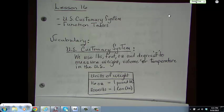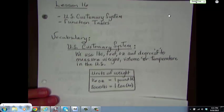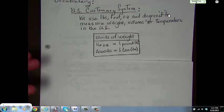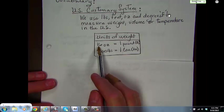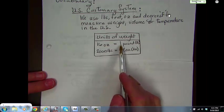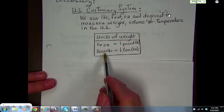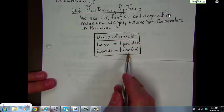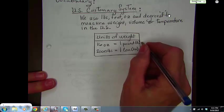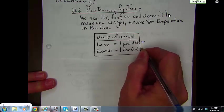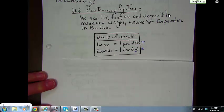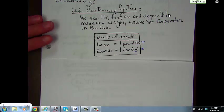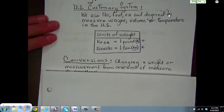Now, the units of weight in the US customary system for weighing is pounds and ounces. So, you have 16 ounces is equal to 1 pound. 2,000 pounds is equal to 1 ton. Notice the abbreviations over here on the right-hand side. Those will be important. You need to use the abbreviations as much as possible.